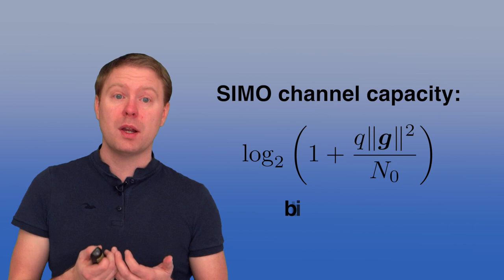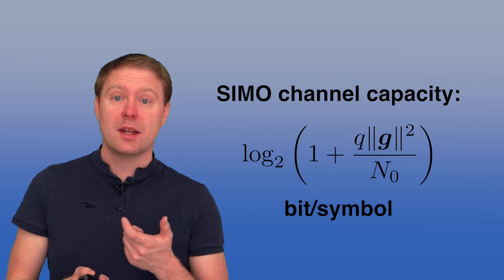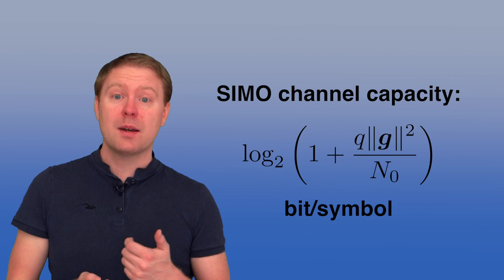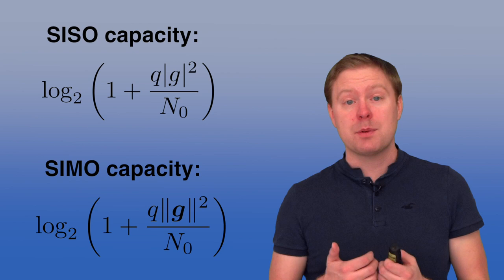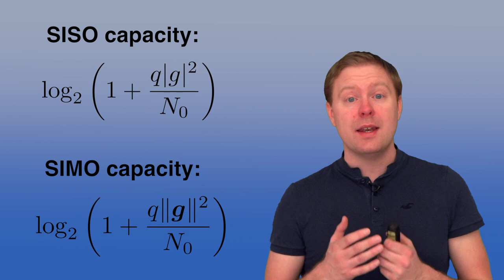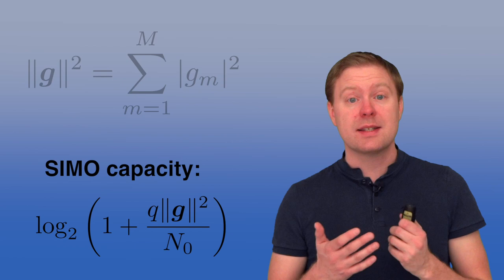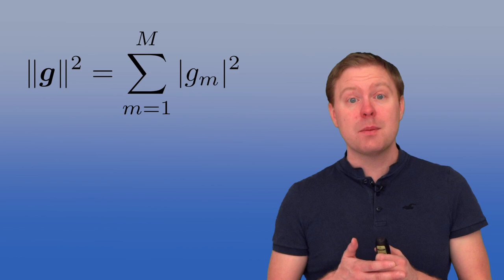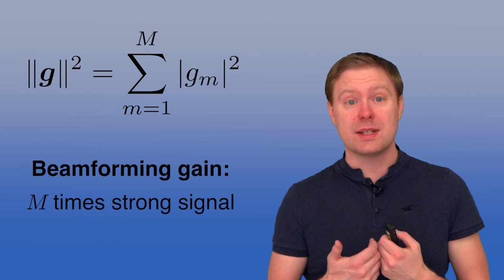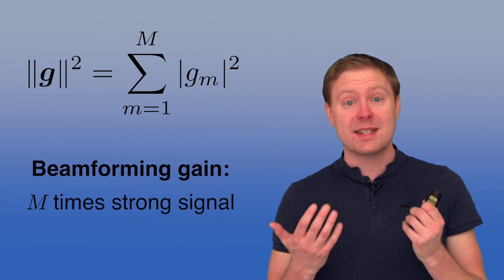That means we can use the same capacity formula as before. The capacity becomes log2 of 1 plus the power Q of signal X, times the squared norm of the channel vector G, divided by the noise variance N0. Comparing the SISO and SIMO cases, the only difference is that before we had the absolute value squared of a single channel response G, and now we get the squared norm of the channel vector — which is the sum of the absolute values squared of each channel response to each of the M receive antennas. If all of these are equal, we get an M times stronger signal, and we will never do worse than having only one receive antenna.